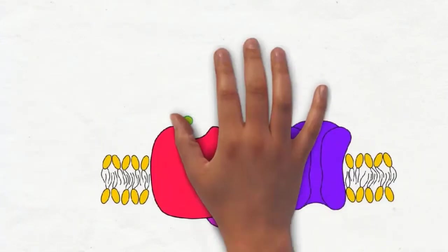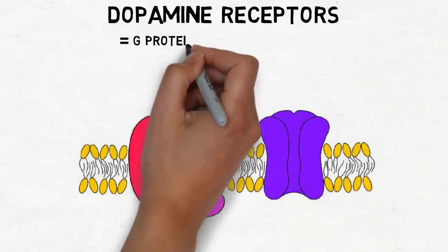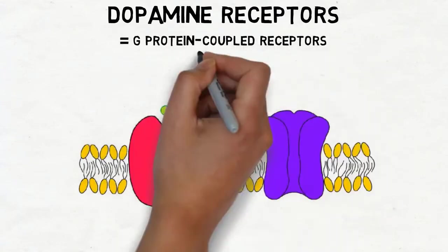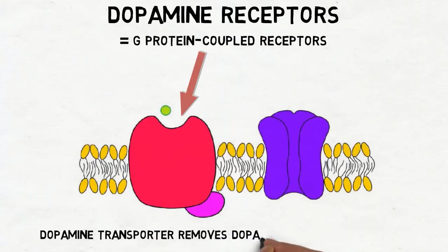Dopamine acts at the G-protein coupled receptor. At least five subtypes of the dopamine receptor exist. Dopamine is removed from the synaptic cleft by a transporter protein called the dopamine transporter.